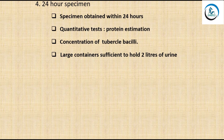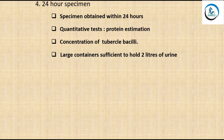The fourth type is the 24-hour specimen. The early morning urine is discarded, and all the urine voided in the next 24 hours — including the early morning specimen the next day — is collected. This is used for quantitative tests like protein estimation and concentration of tubercle bacilli.